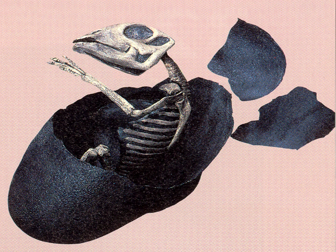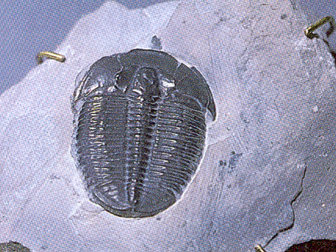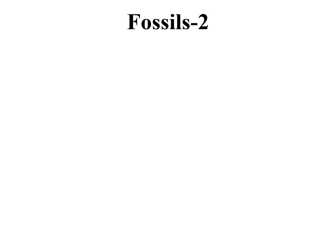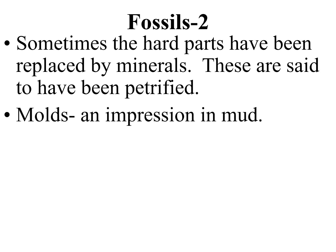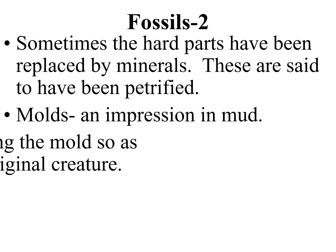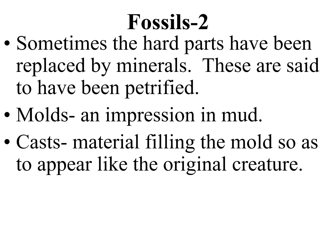These are trilobites, which occurred all over planet Earth, and we got to see their evolution over time in the rock. Sometimes the hard parts of a fossil have been completely replaced by minerals — those fossils would be said to have been petrified. A mold would be an impression in the mud, and a cast would be material that has filled it in. The cast looks like the original creature; the mold looks like an outline of the original creature.